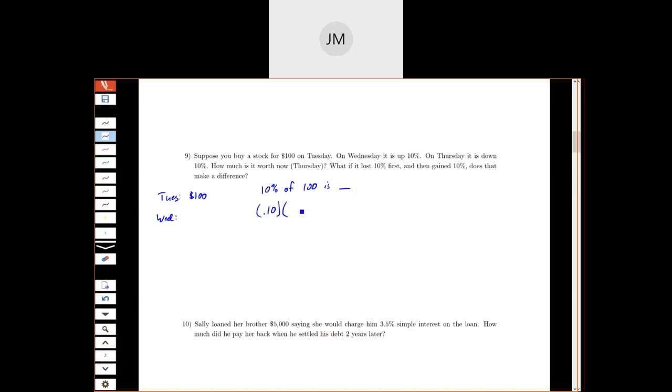So 0.10 times 100. When I multiply I get 10. So a 10% increase is a $10 increase. So then the new price is going to be $100 plus $10. So we get $110.